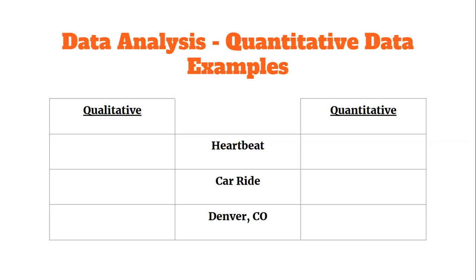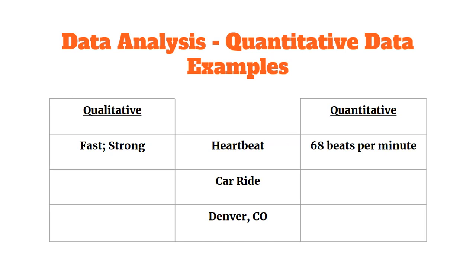Let's take a look at some examples of what qualitative and quantitative data could look like. Starting with the heartbeat — think of a quality or trait you could pick up on with your senses. Some examples would be fast or strong. Those are values that are very difficult to describe with numbers. For a car ride, qualitative observations might be that it was boring or bumpy.